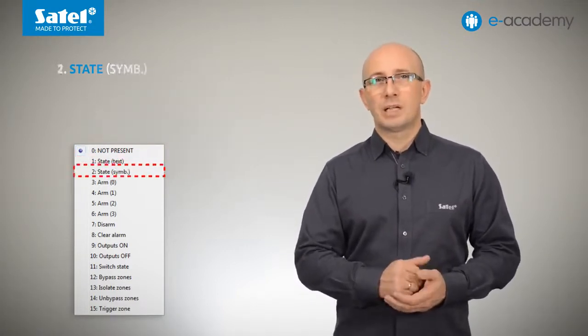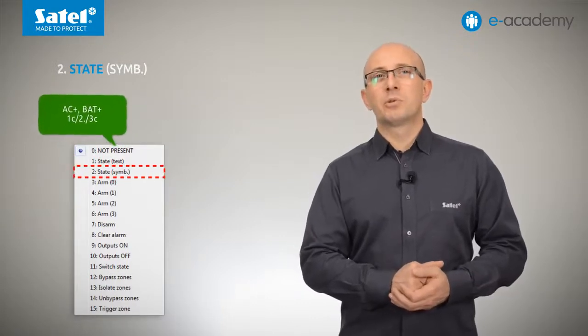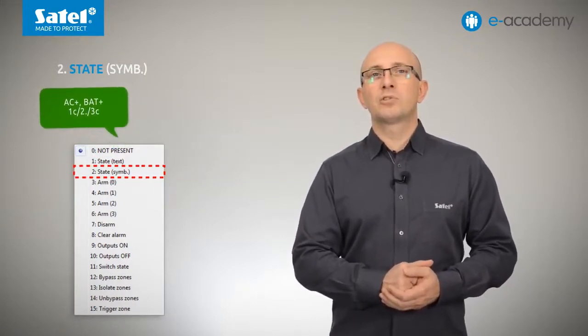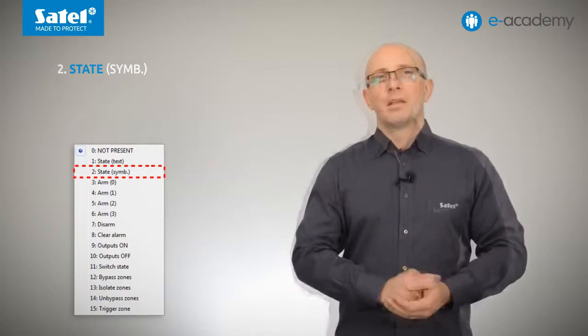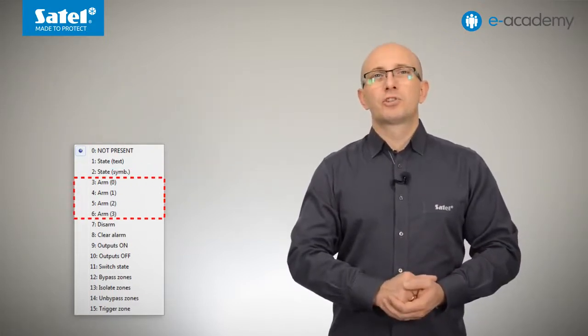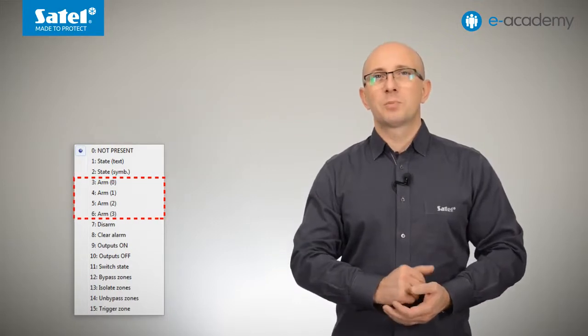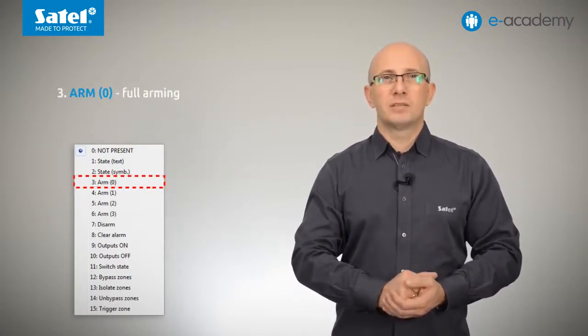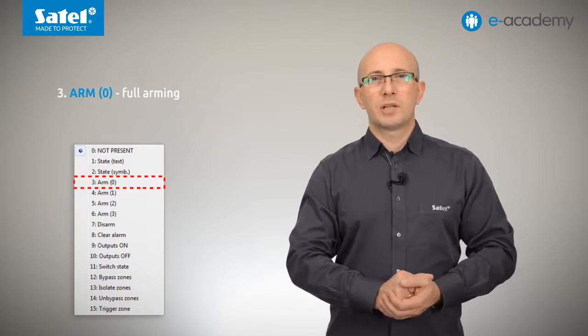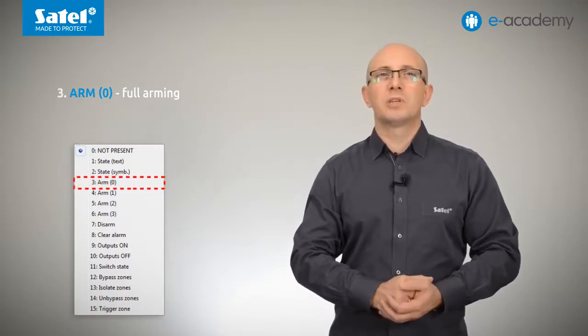The second function, that is, state SYMB, works similarly, but the module responds with an abbreviated SMS message. The next functions on the list from the third to the sixth apply to four modes of arming. So item three, arm 0, means arming in full mode. All detectors assigned to the selected partitions will be armed.